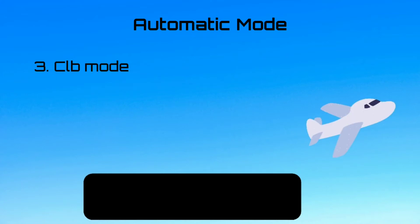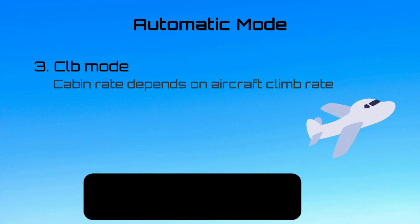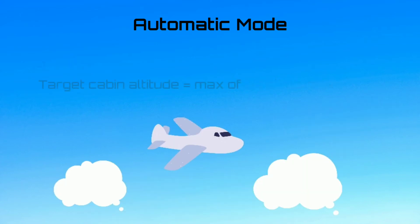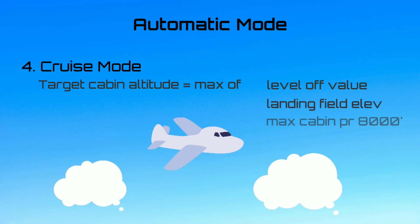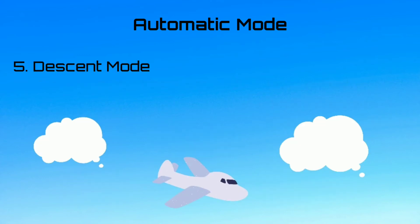In the climb phase, the cabin altitude varies according to a fixed pre-programmed law that takes into account the aircraft's actual rate of climb. During cruise, the controller maintains cabin altitude at the level-off value, or at the landing-field elevation, whichever is higher, but the cabin altitude target is limited to a maximum of 8,000 feet. During descent, the controller maintains a cabin rate of descent such that the cabin pressure is equal to the landing-field pressure plus 0.1 PSI, shortly before landing.